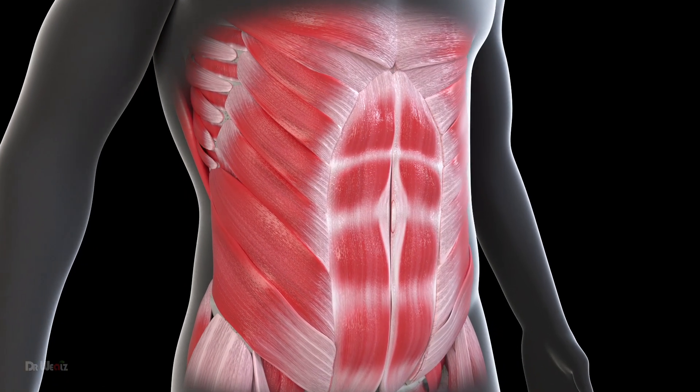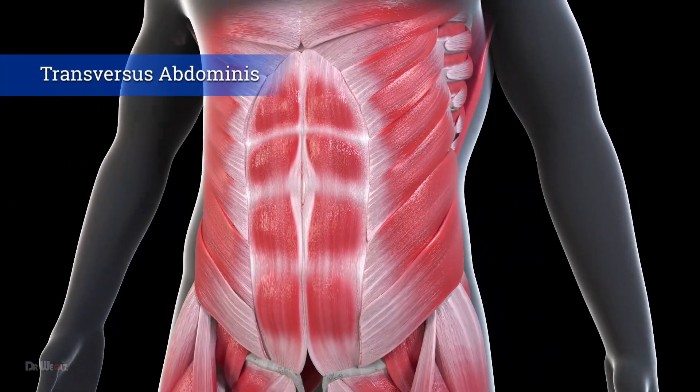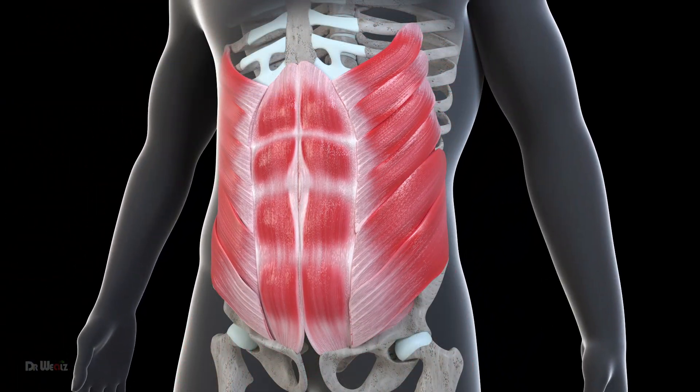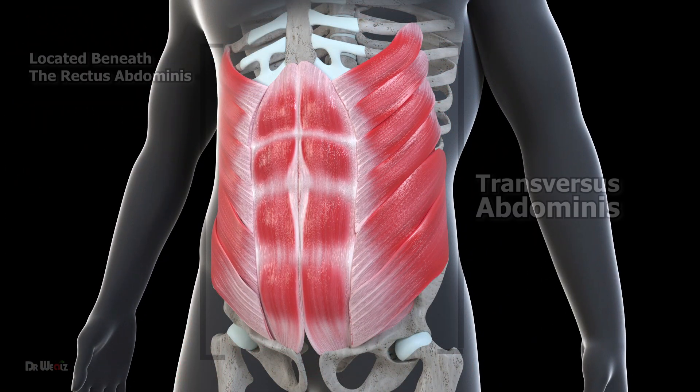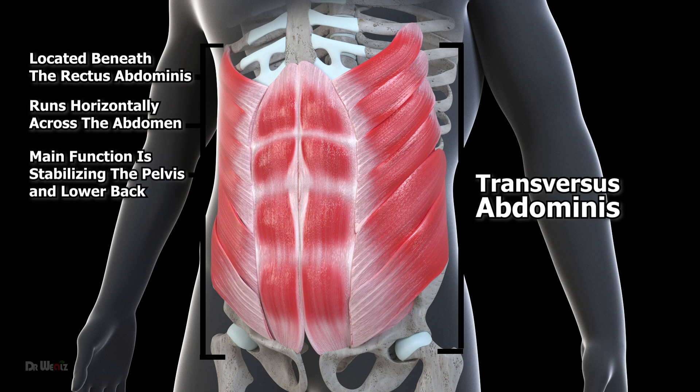Let's start with the transversus abdominis, which is the deepest abdominal muscle located beneath the rectus abdominis. This muscle runs horizontally across the abdomen and its main function is to stabilize the pelvis and lower back.